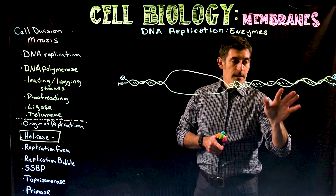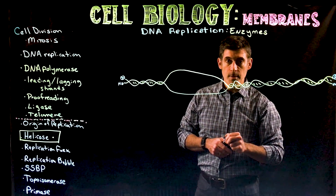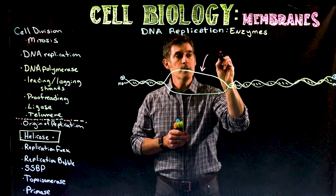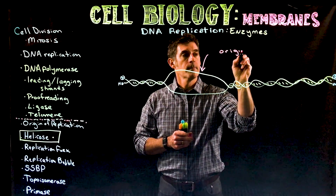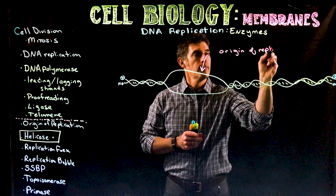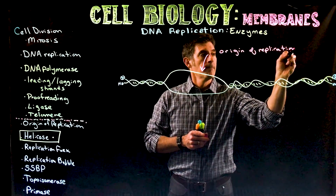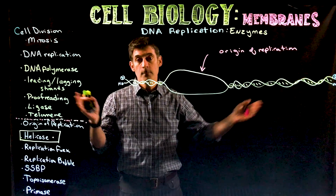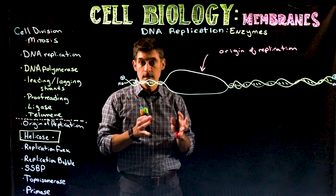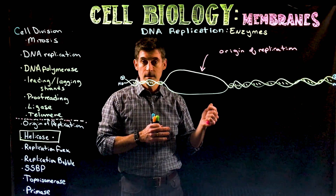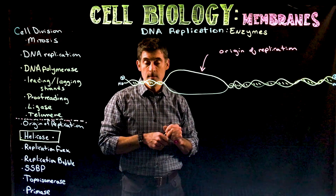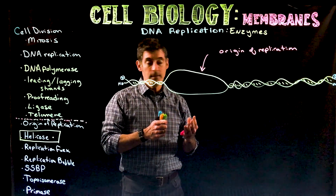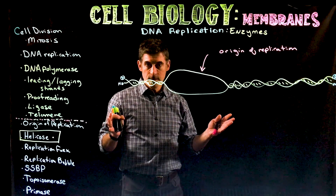Double-stranded DNA is held together with hydrogen bonds. Along the DNA there are regions called origins of replication. Each chromosome is incredibly long in eukaryotic cells; in prokaryotic cells they're much smaller. Many bacteria have only a single origin of replication — some have more than one and can do this process faster — but eukaryotes have many origins of replication because the information is vast.